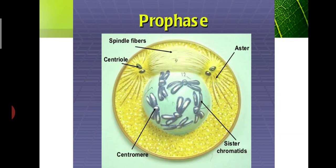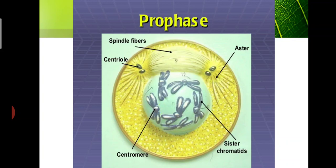Here you can see another view — the animated form of prophase. You can see the spindle fibers, centrioles, chromatids, and the centromere. The centromere is the center part of the chromosome on both sides.